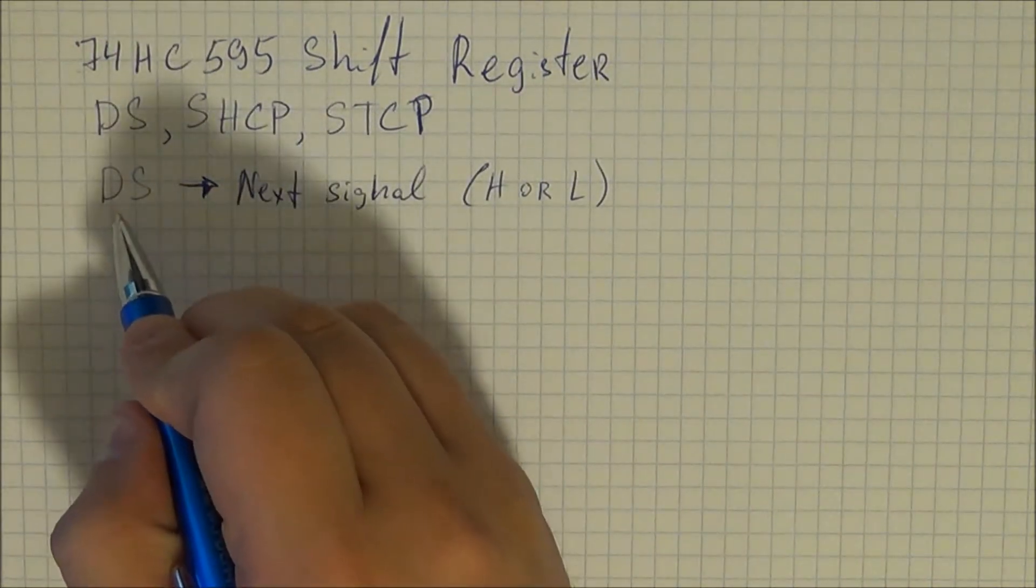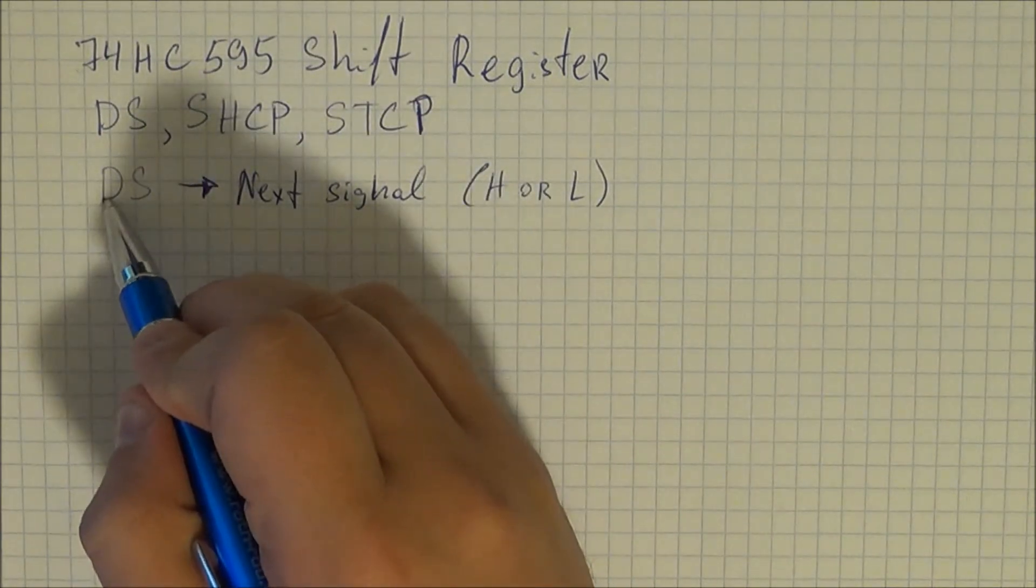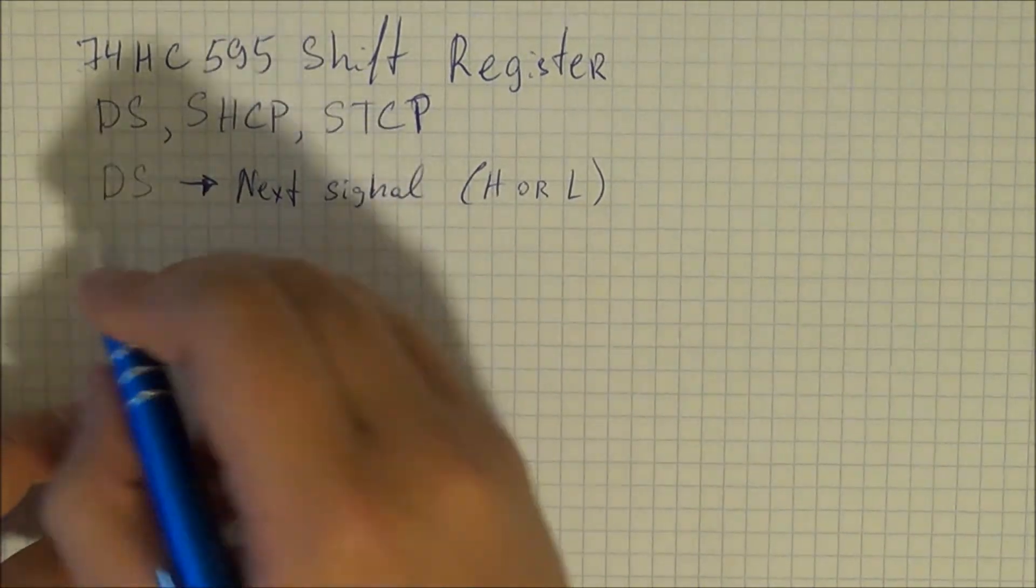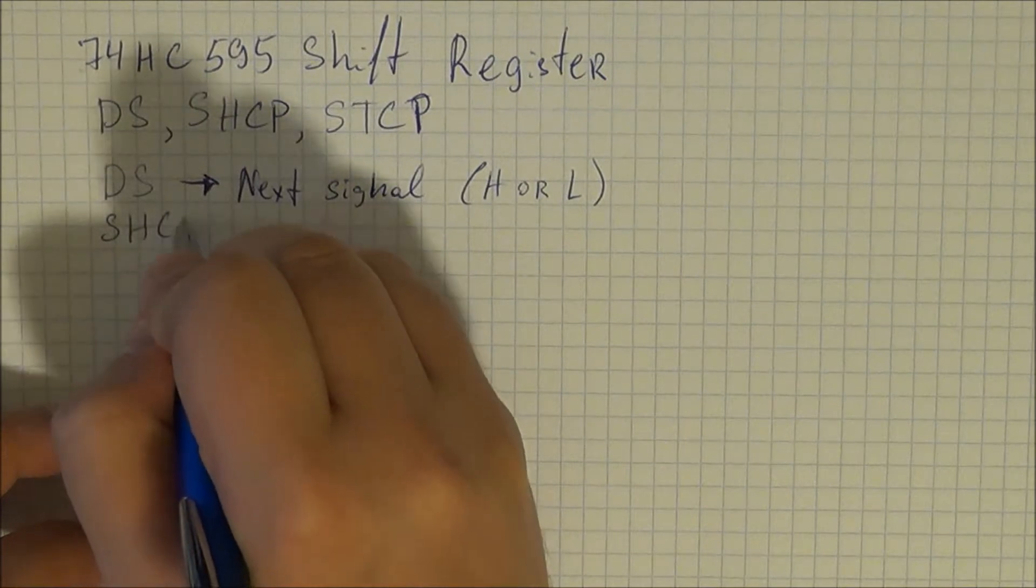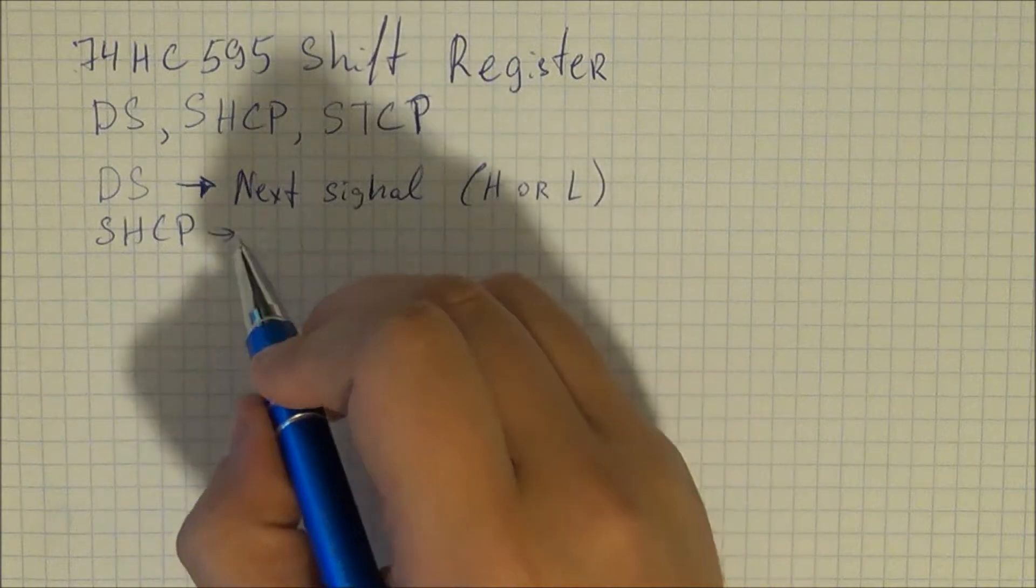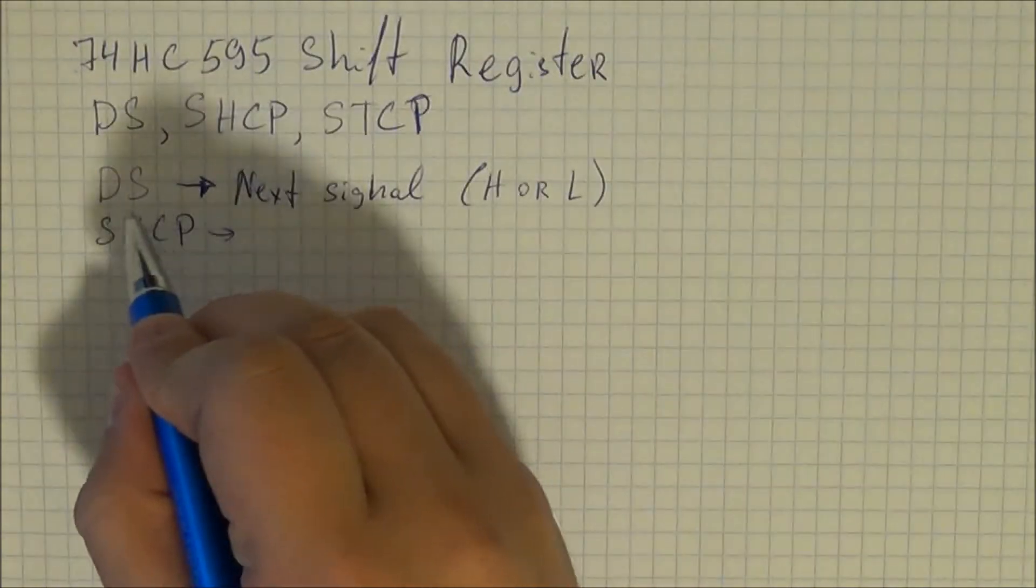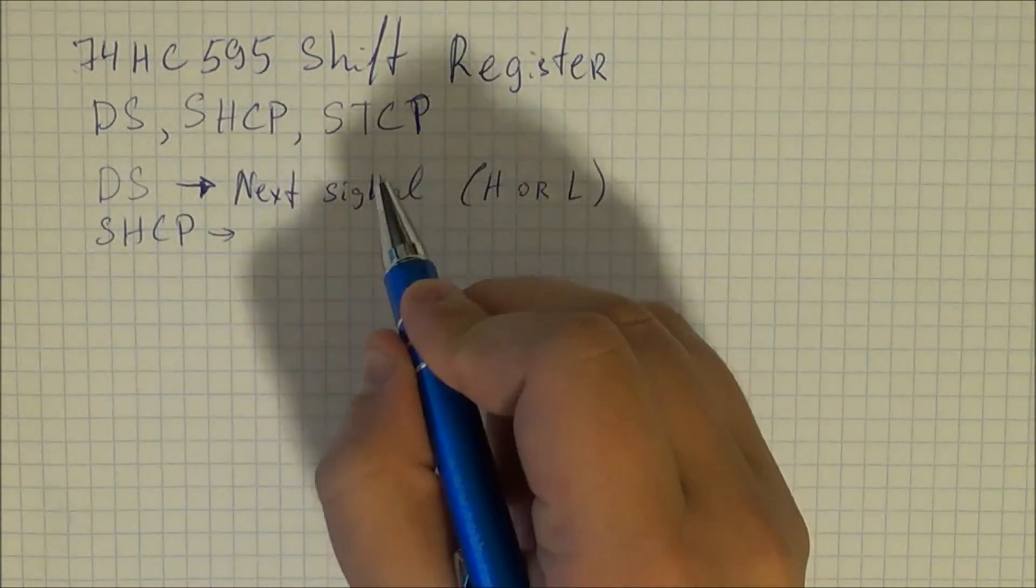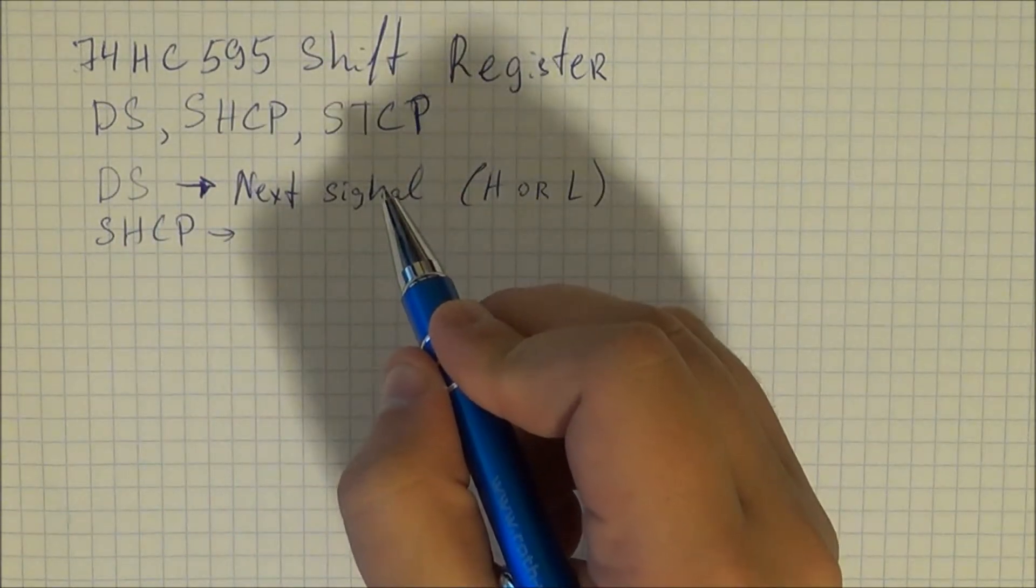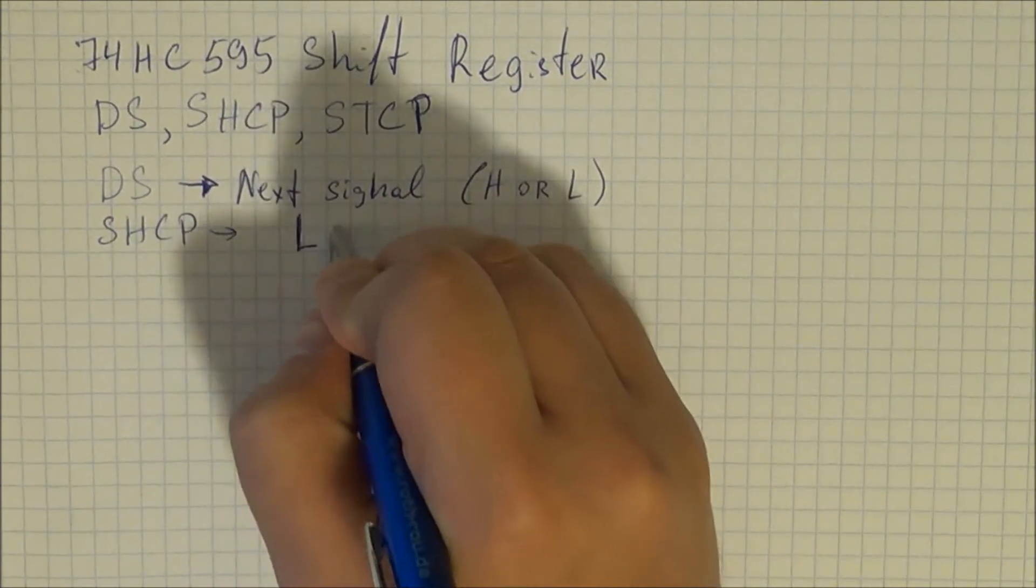This is basically the pin which is sort of in standby and awaiting you to tell it do you want the next LED to be high or do you want the next LED to be low. So the SHCP pin is a clock signal for your D flip flops which is going to shift between each signal. What that means is once you've selected your DS so high or low you tell it okay enter that DS pin into the system.